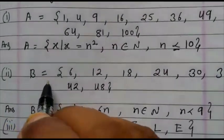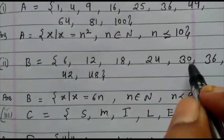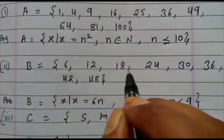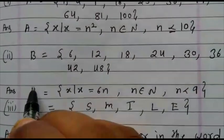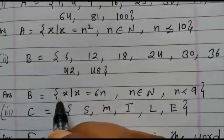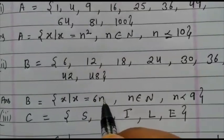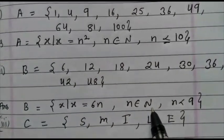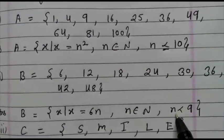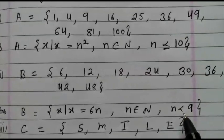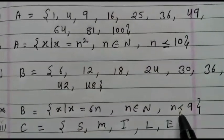Next second, B equals 6, comma, 12, comma, 18, comma, 24, 30. Now look at this number. That is the table of 6. How to write? Set B equals x of x equals 6n, n belongs to natural number. Till here is 48. So we have to write n value is less than 9, because 6 times 8 is 48. That's why this condition is there.